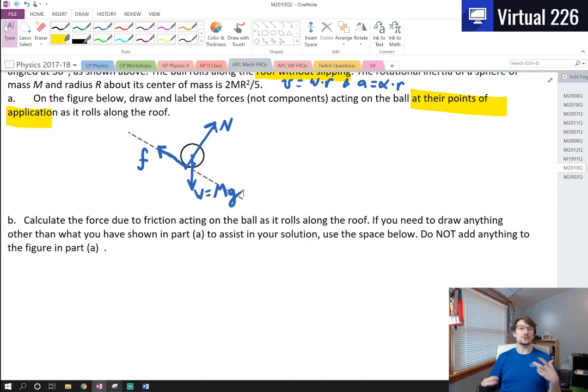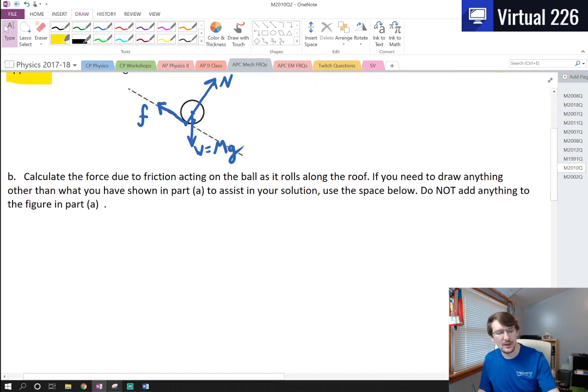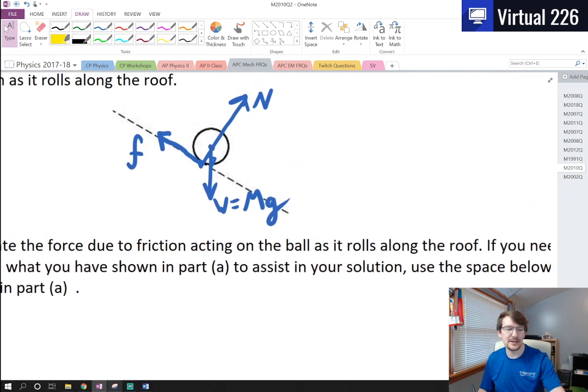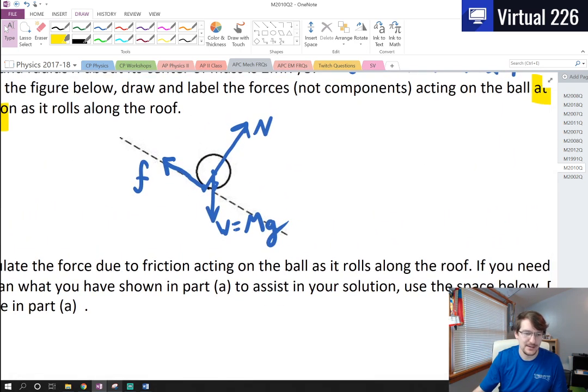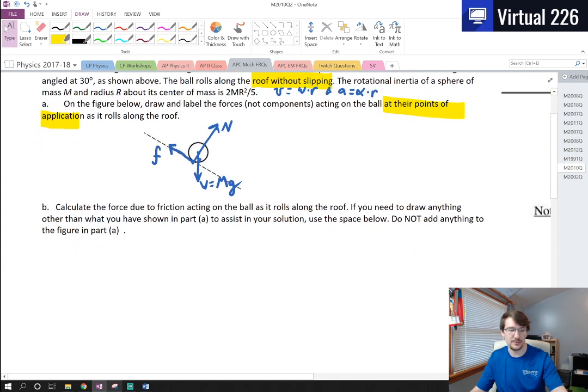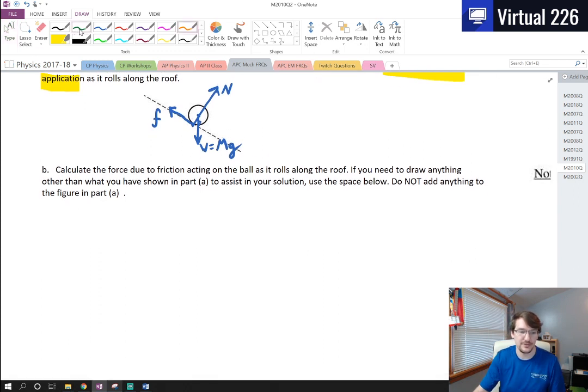The reason why they asked for us to draw a force body diagram where the forces are drawn at the locations they're acting is because we have rolling objects here. This rolling bowling ball is going to have a torque associated with it. Torque is equal to the cross product of the moment of inertia and the force acting. This force of friction is acting at some radial distance, and that's what we're needing to think about in Part B.